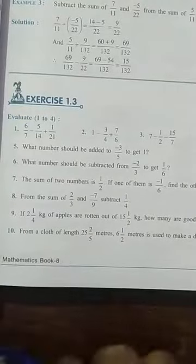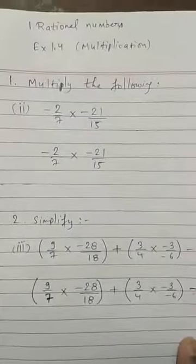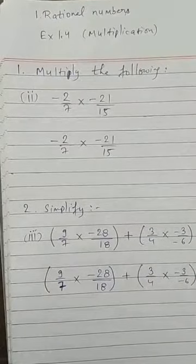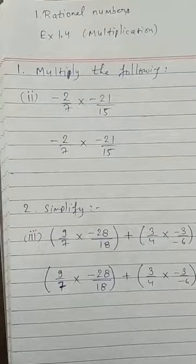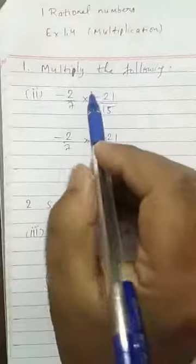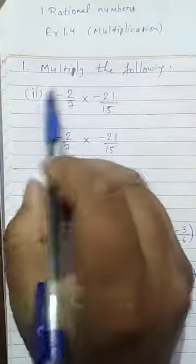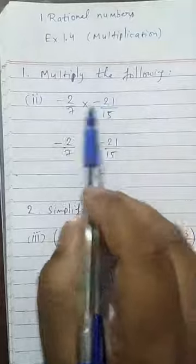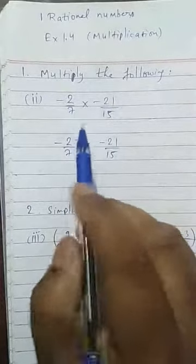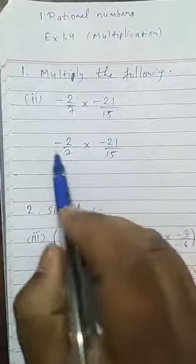By yourself. Exercise 1.4 is based on multiplication of rational numbers. Multiply the following. I am taking the second part. You will not start deduction on the question. You have to write the expression again. Here, here you will start.